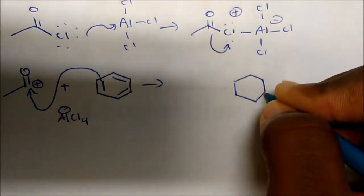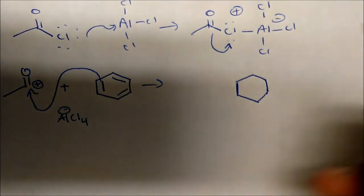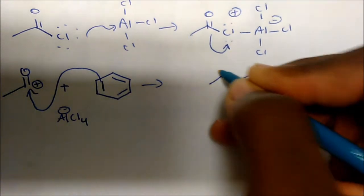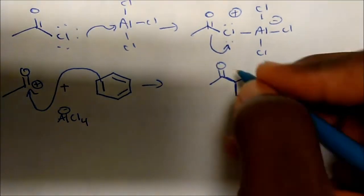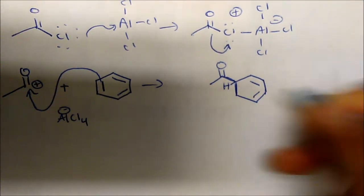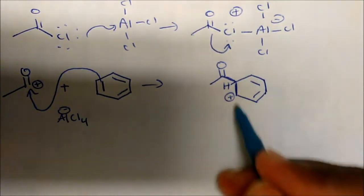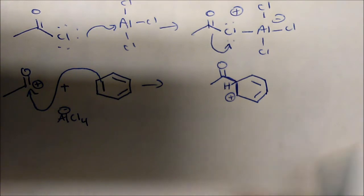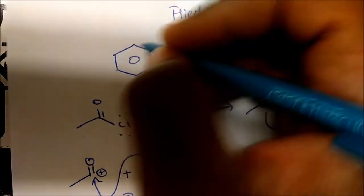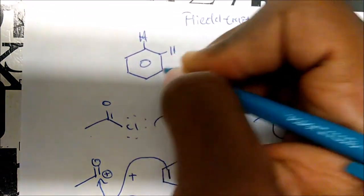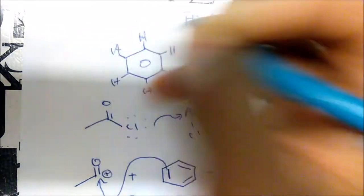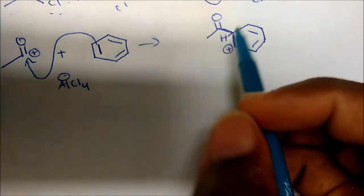My benzene attacks and I'm gonna form a carbocation on my benzene adjacent to where the bond is formed. My bond is formed here - we have our carbonyl, we still have one of the hydrogens, and we form a plus charge adjacent to where the bond is. This hydrogen has been there - we started with benzene which has one hydrogen on each of the carbons.